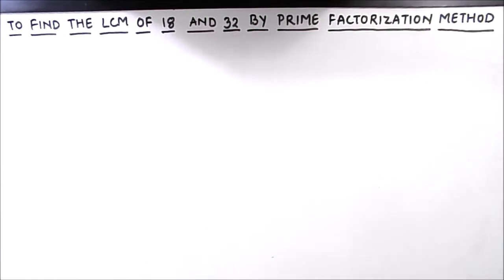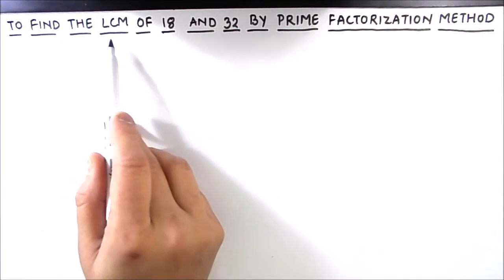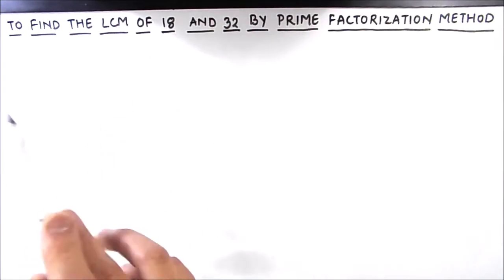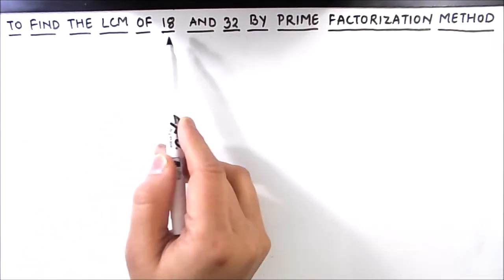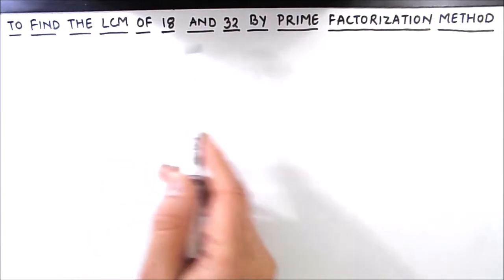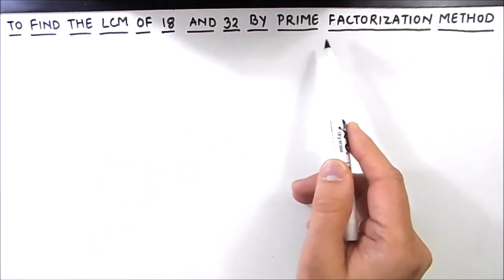Hello everyone. In this video we are going to learn how to find the LCM of 18 and 32 by the prime factorization method. LCM is the least common multiple, or the lowest common multiple — it is the multiple of the two numbers which is least and common between them.